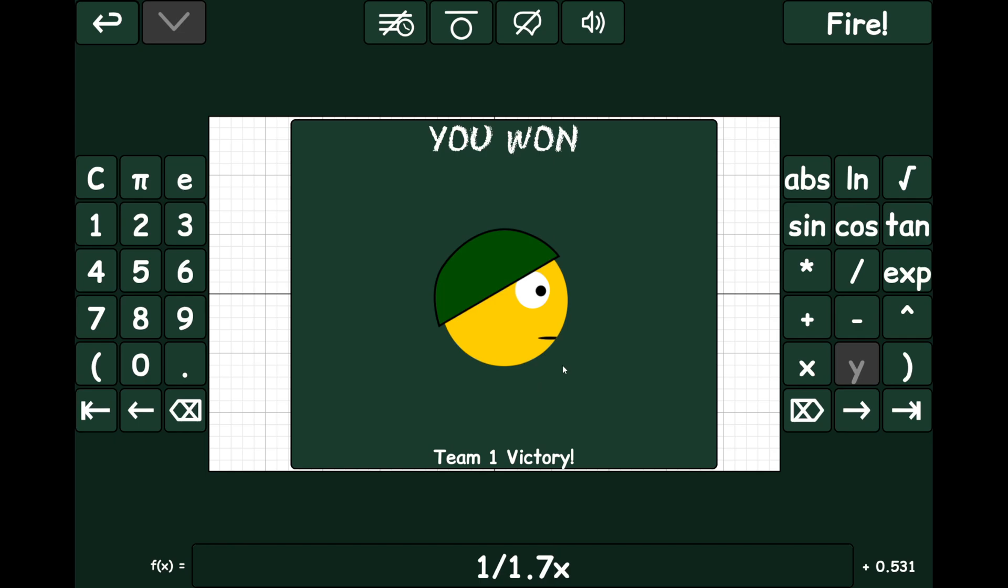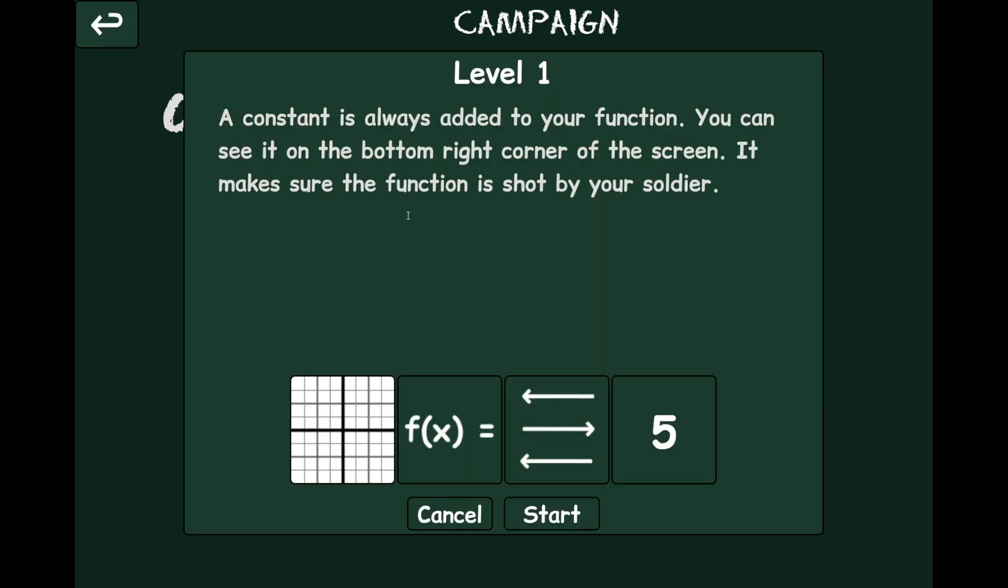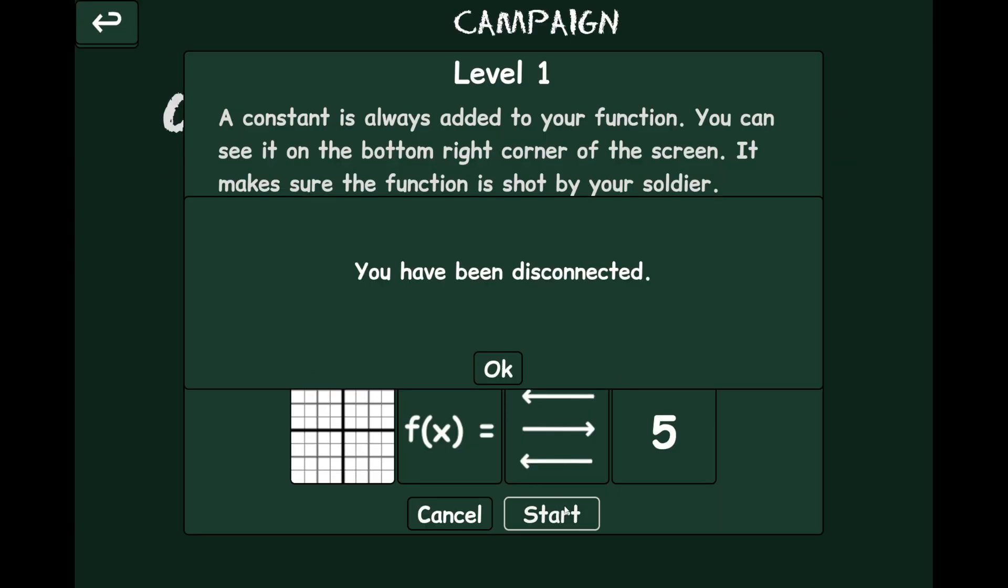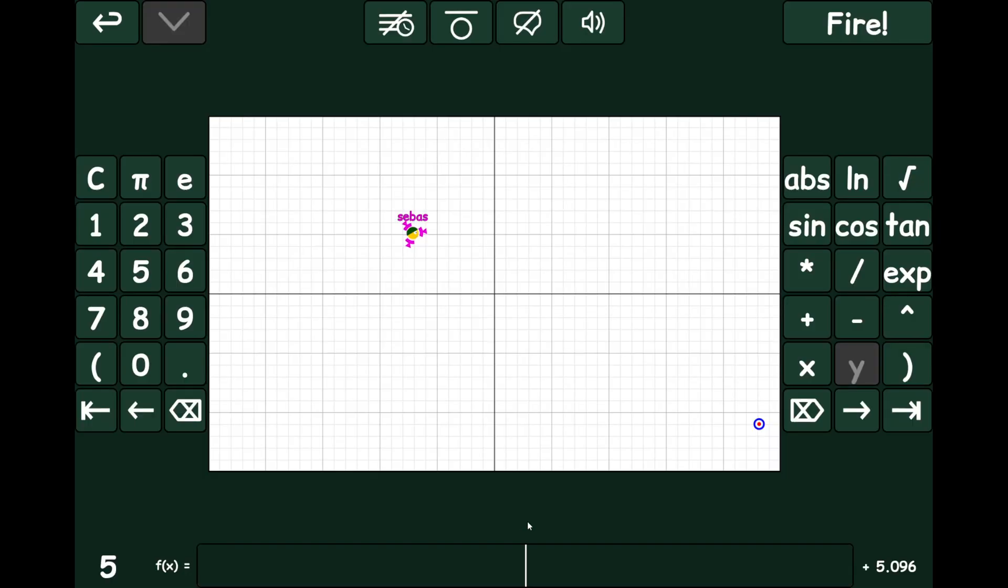I have no idea how I'm supposed to have actually done that. Hopefully someone will leave a comment down below telling me why I'm doing this so terribly wrong. Disconnected from what? It's a campaign. It's single player.